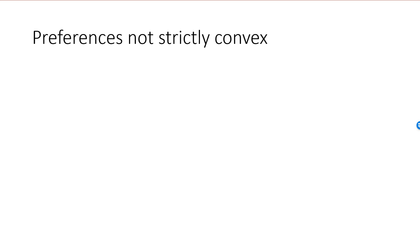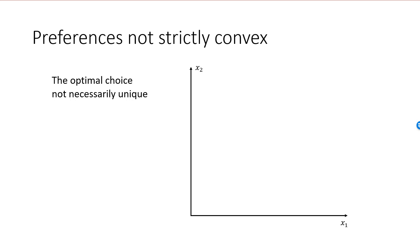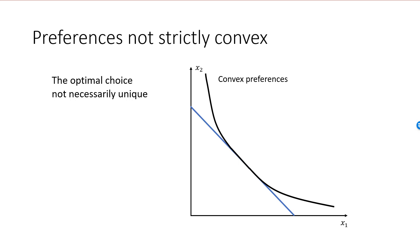Say that we have strictly monotonic preferences with smooth indifference curves that are convex, but not strictly convex. In this case, optimal choice need not be unique. The reason is that with convex preferences, indifference curves may have segments which are straight lines. I have my budget line, and here is one indifference curve. This curve is convex, but not strictly convex, and we see that there are many bundles on the budget line which are optimal. All bundles on the red line segment, where the indifference curve overlaps the budget line, will be optimal.